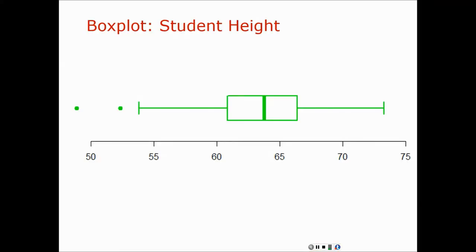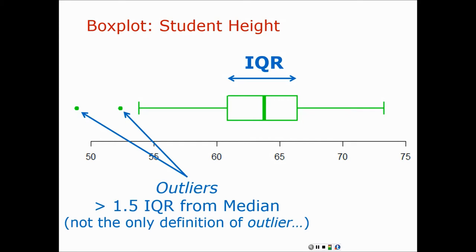In this familiar box plot, the width of that center section is the interquartile range. Those dots are outliers. The way outliers are usually defined for box plots is that an outlier is anything more than one and a half IQRs away from the median. The middle vertical line is the median, and the IQR is the width of the box. So the observations beyond one and a half IQRs are the outliers. The IQR not only tells you how much spread there is, but it becomes a yardstick for measuring within a distribution.